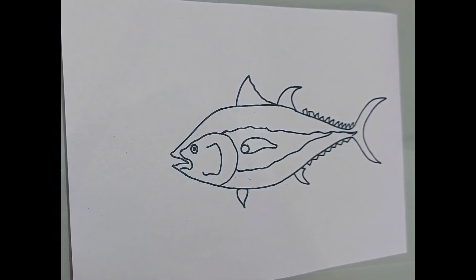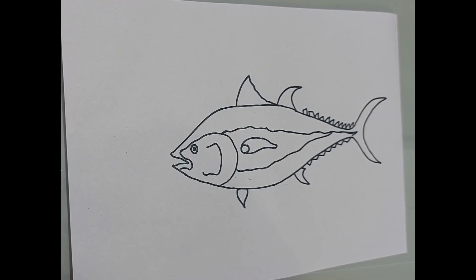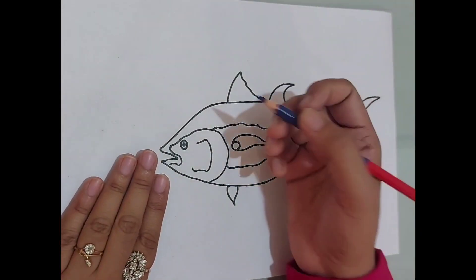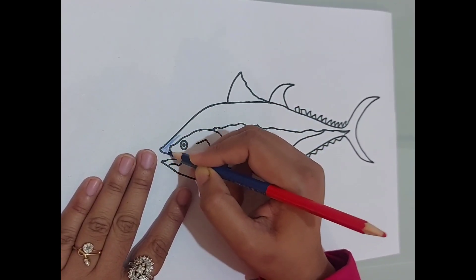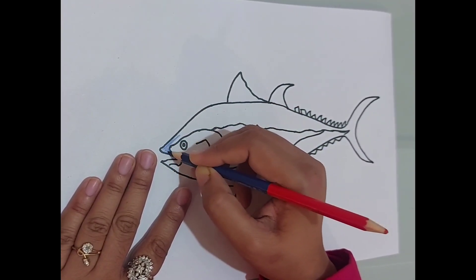So friends, our drawing of tuna fish is complete. Now start coloring it. I am going to color it with pencil colors. For that, I have taken this dark blue pencil color.